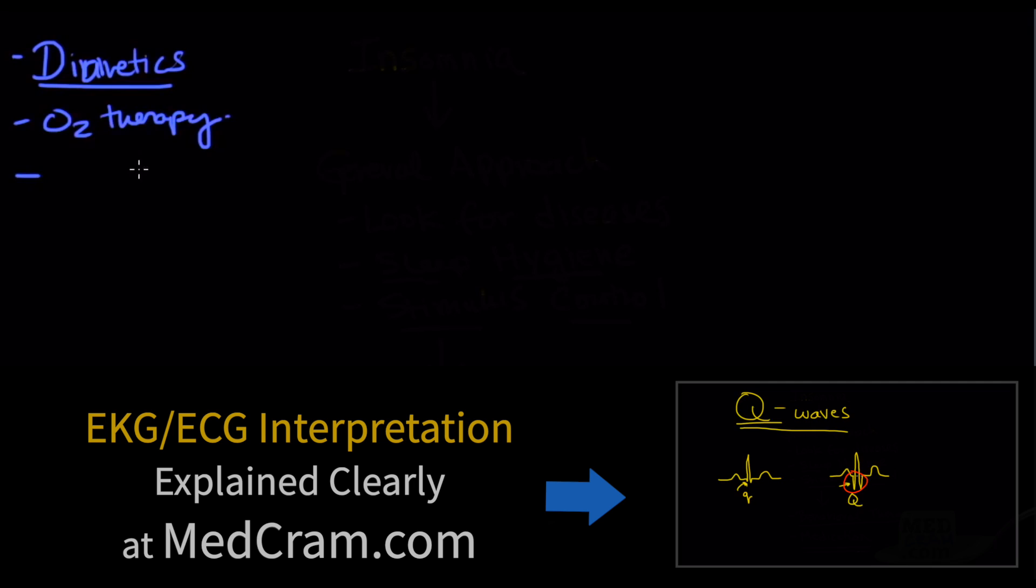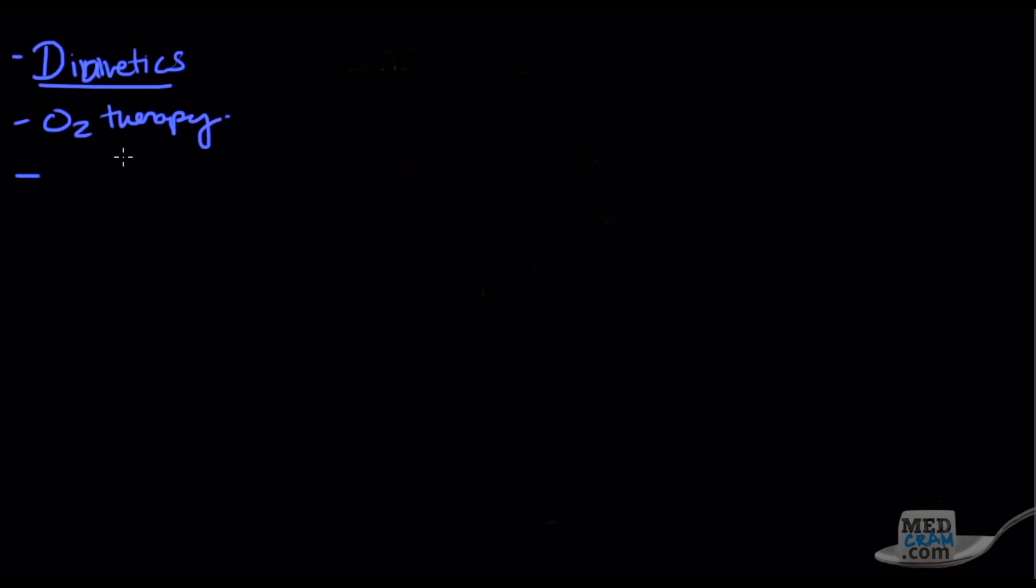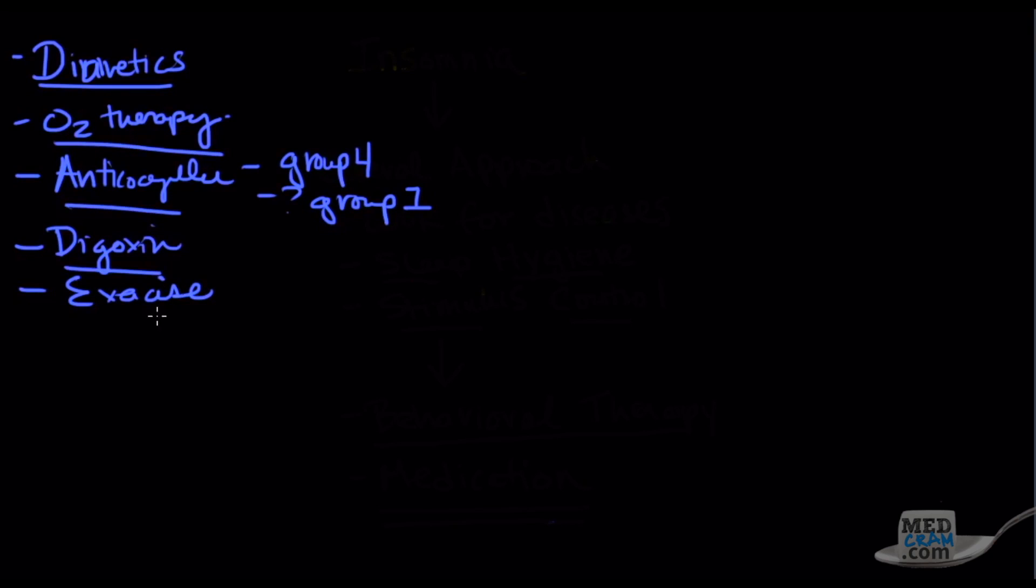They've noticed on autopsies that there are a lot of blood clots not just in group chronic thromboembolic pulmonary hypertension but also in the other groups. After many studies, anticoagulation was found to be definitely something that you want to do in group four and maybe in group number one. Other medications that might be beneficial are digoxin and exercise. These are ones that can go to just about all classes.